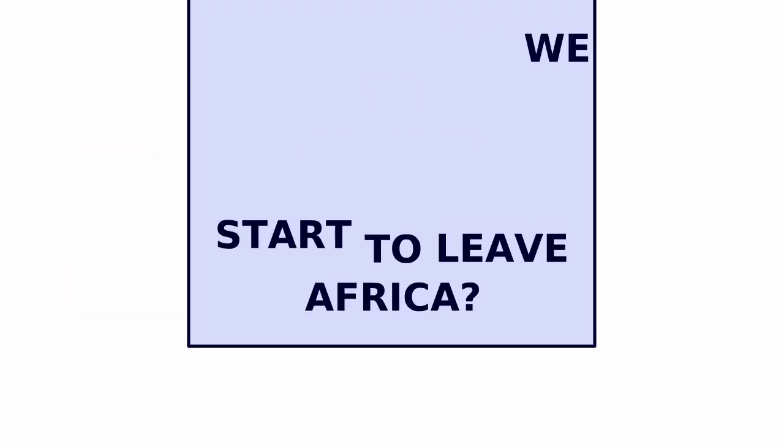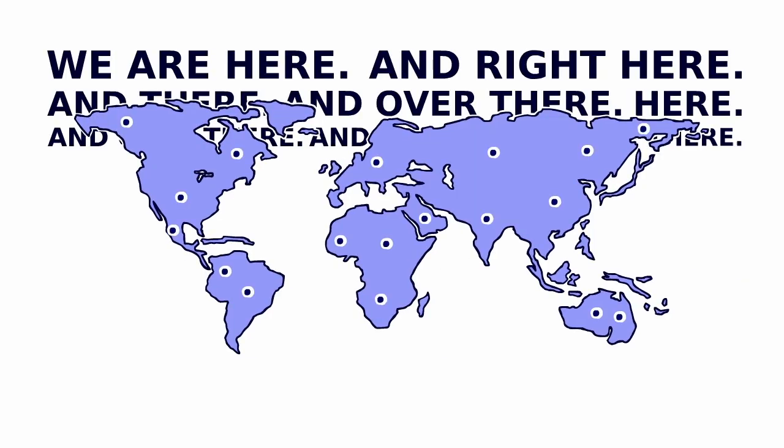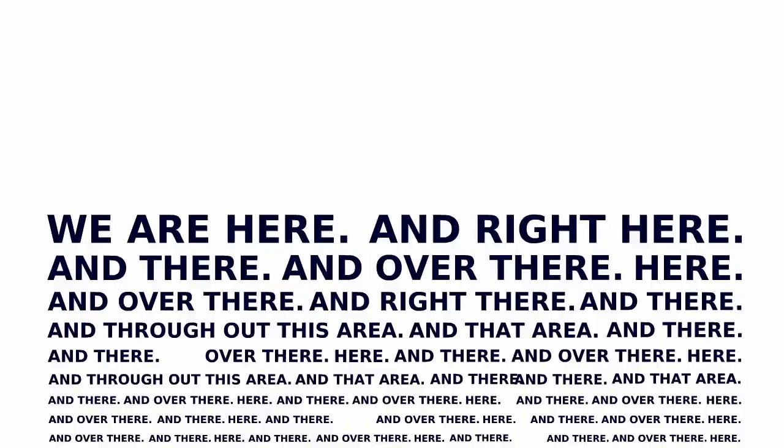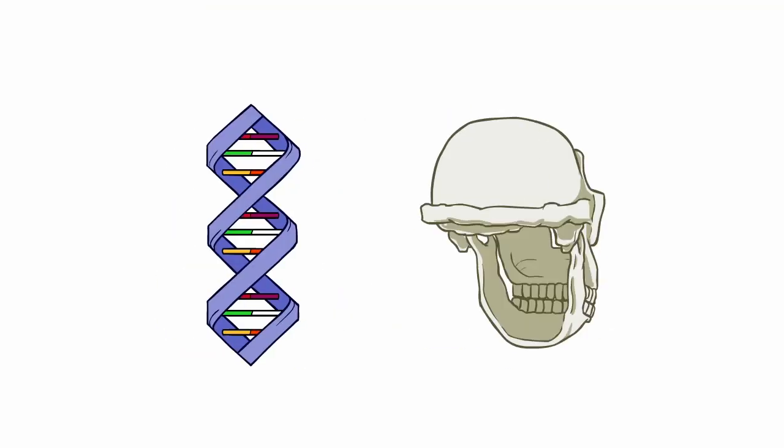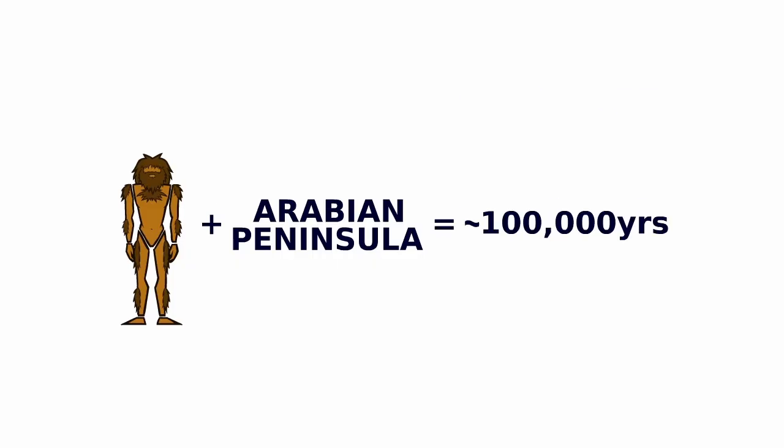But when did we start to leave Africa? Today humans are truly a global species, permanently inhabiting every continent on the planet. Here the fossil and genetic evidence prove slightly contradictory, but it is safe to say that there was some form of modern human migration onto the Arabian Peninsula around 100,000 years ago.